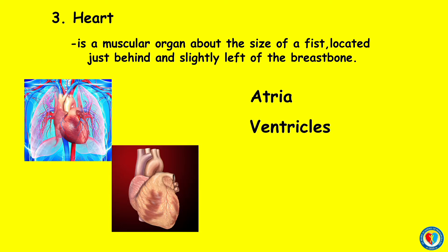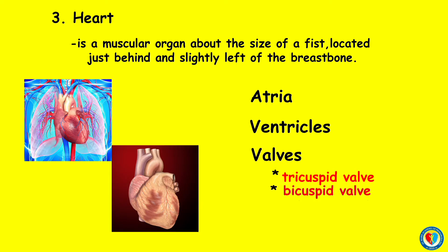Ventricles are the hollow parts in the heart. Valves are actually flaps that act as one-way inlets for blood coming into a ventricle and one-way outlets for blood leaving a ventricle. The four valves of our heart are the tricuspid valve, bicuspid valve, aortic valve, and pulmonary valve.